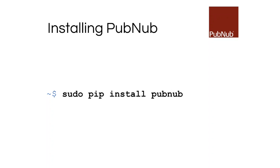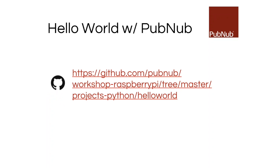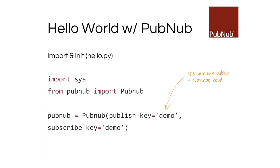Let's install PubNub. You can use pip to install it with `sudo pip install pubnub`. It will probably fail if you don't properly upgrade your system first. Once installed, let's try a Hello World. The key exercise here is to publish and subscribe — which is the key component for creating Internet of Things.